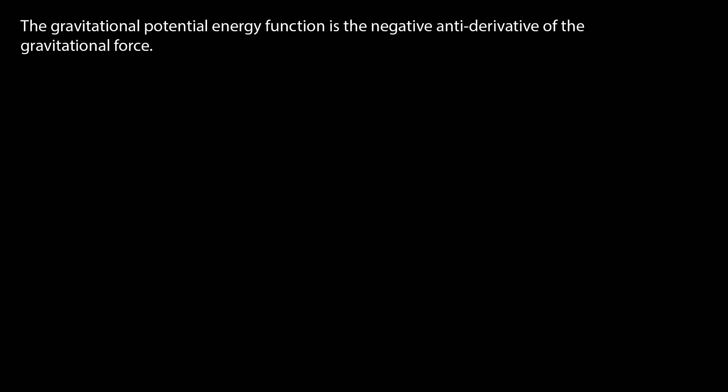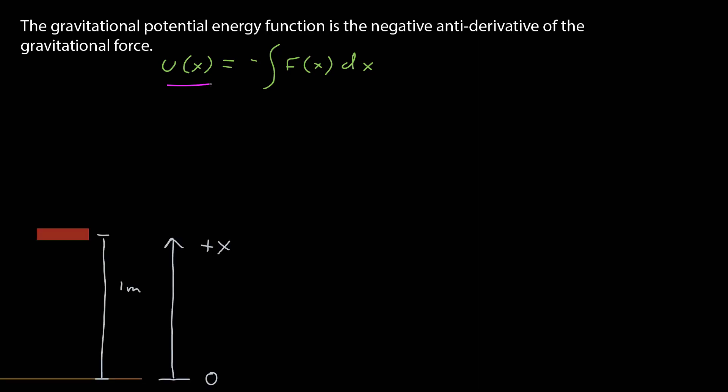Let's take a look at what that means. My potential function is the anti-derivative of the force function. To come up with an expression for my force function, I need a coordinate system. I'll set my zero at the ground and positive x up. In my one-dimensional notation, my force — all along the x-axis — is just negative mass times the acceleration due to gravity. The negative anti-derivative of that force is mg times x plus some constant C.